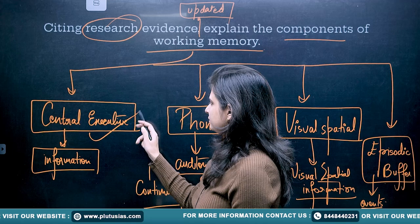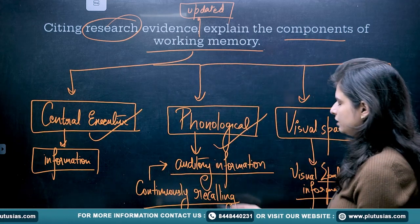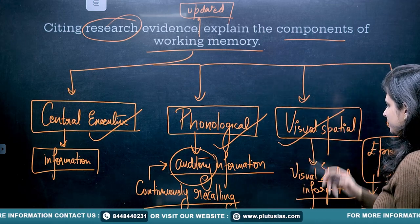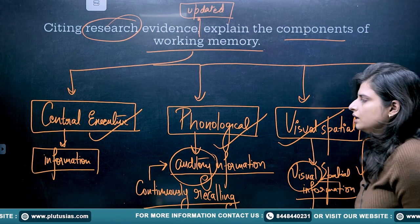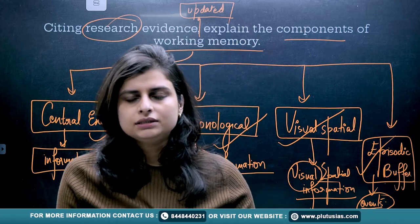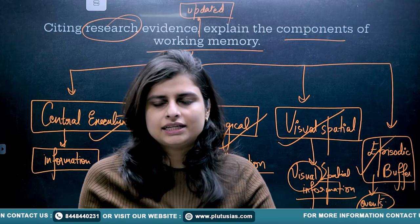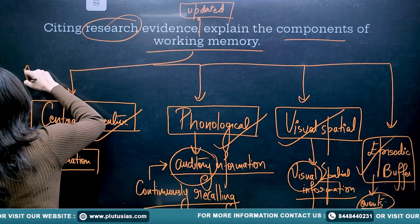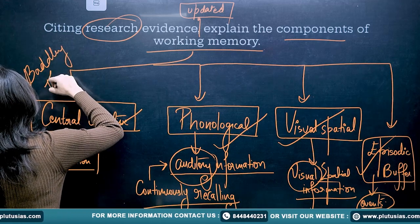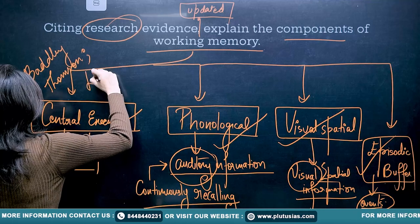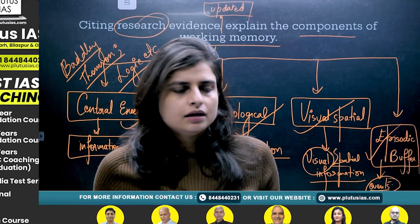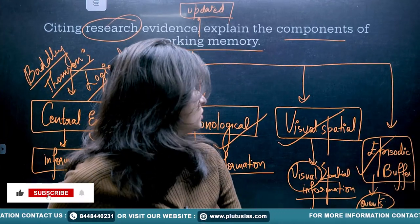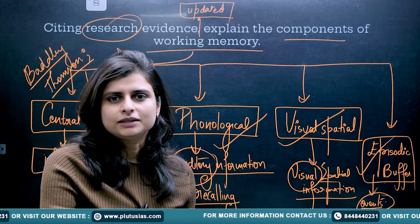So the central executive is there, the phonological part is there which talks about auditory information, then the visual-spatial part that talks about visual information, and then the episodic buffer which talks about the events part. This is the major segment of working memory. You can do a little bit of research — there is research run by Baddeley and Thompson, and you can also talk about research by Logie, etc. You can provide examples of the various research done by them in different aspects. This is how you are going to attempt this question on working memory. Thank you so much.